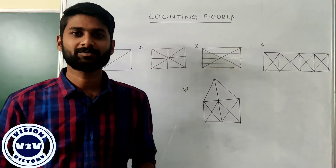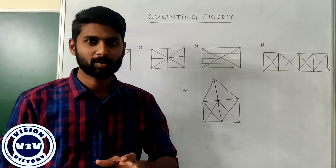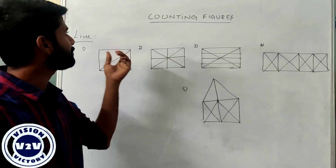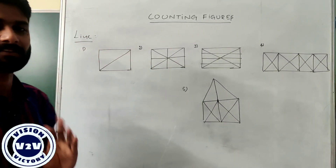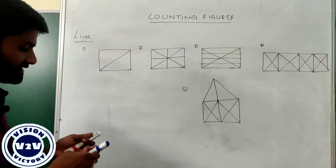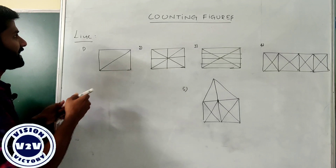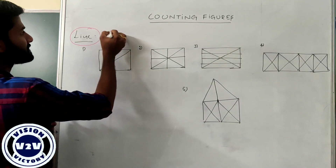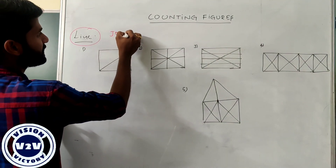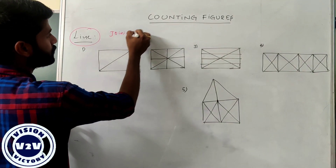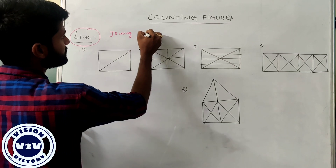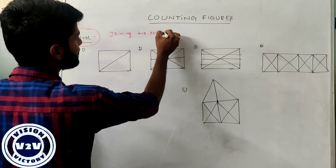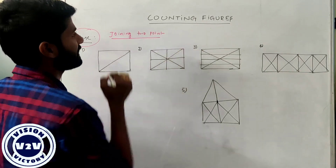Let us see the next model: counting. Counting the number of lines in the given figure. A line means the joining of two points. If joining of two points, I can call it a line.